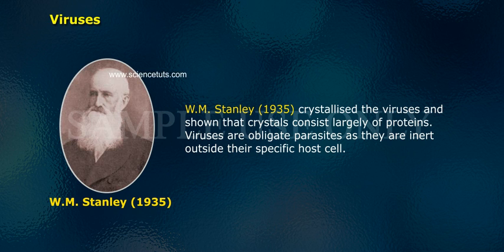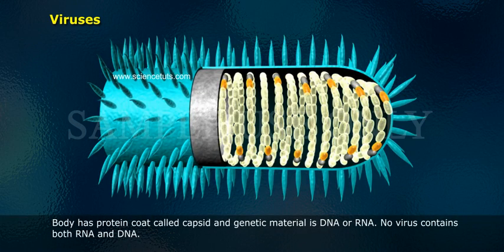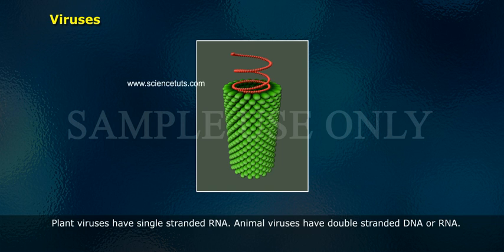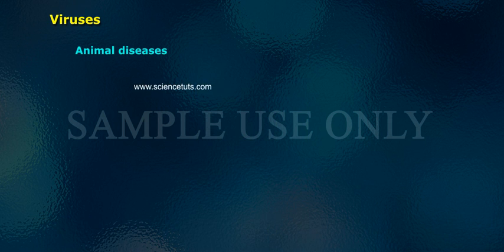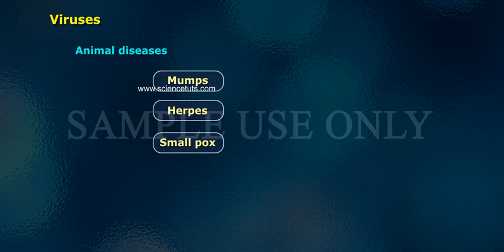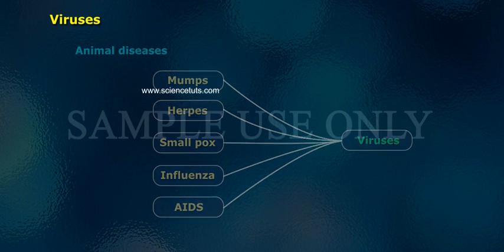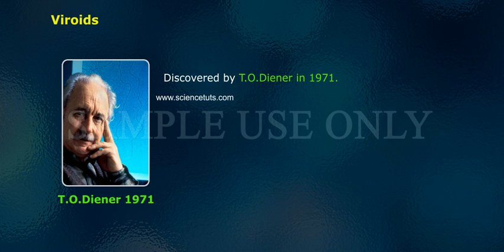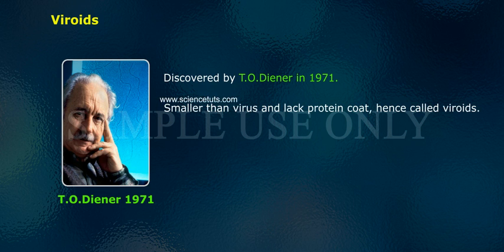Viruses are obligate parasites as they are inert outside their specific host cell. Their body has a protein coat called the capsid, and genetic material is either DNA or RNA. No virus contains both RNA and DNA. Plant viruses have single-stranded RNA; animal viruses have double-stranded DNA or RNA. Animal diseases like mumps, herpes, smallpox, influenza, and AIDS are caused by viruses. Plant diseases like mosaic, leaf rolling, curling, and yellowing of leaves are also caused by viruses.